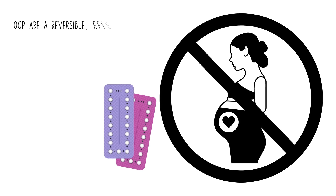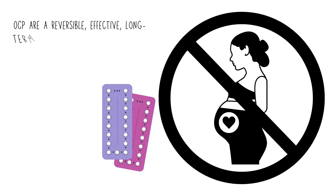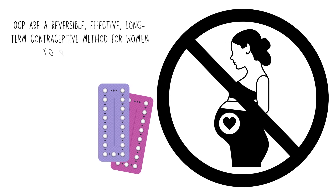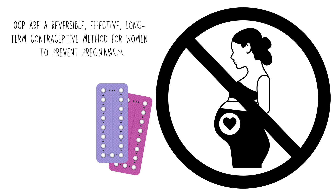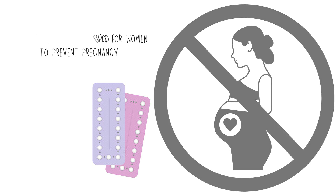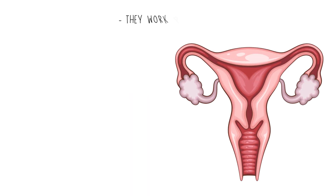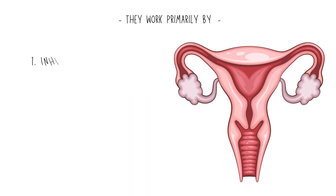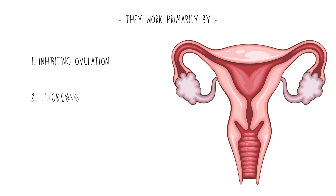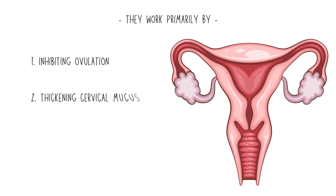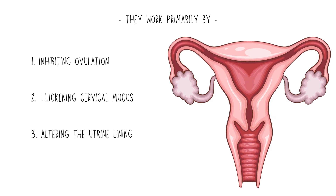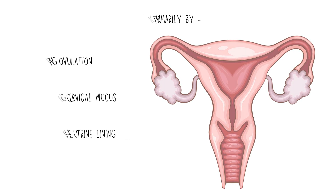Oral contraceptive pills are a reversible, effective, long-term contraceptive method for women to prevent pregnancy. They work primarily by inhibiting ovulation, thickening cervical mucus, and altering the uterine lining to prevent implantation.